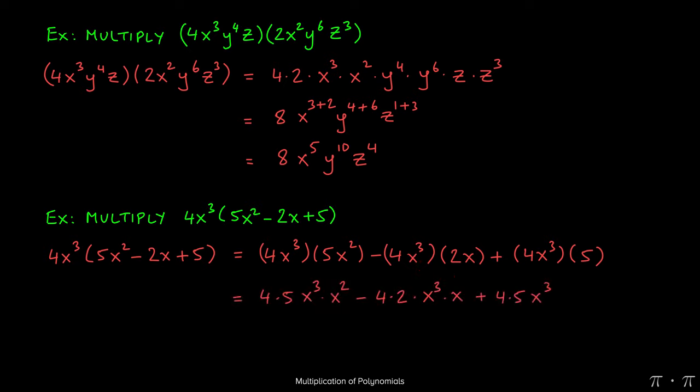So writing this down gives us 4 times 5 times x³ times x². Here we have negative 4 and 2, x³ and x. Here we get 4 and 5, but the x³ doesn't have a corresponding term with 5, so it just stays there by itself.